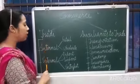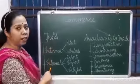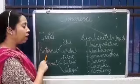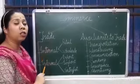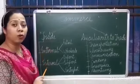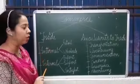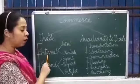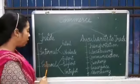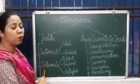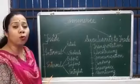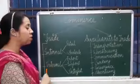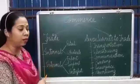Trade is of two kinds: internal and external. When trade takes place within the geographical boundaries of our country, it is known as internal trade. When trade takes place between two or more different countries, it is termed as external trade.